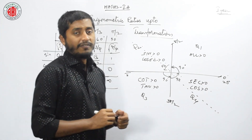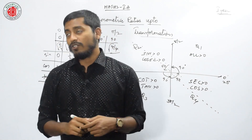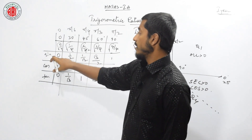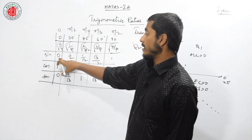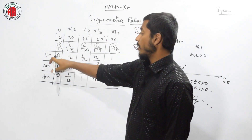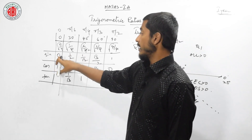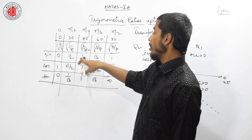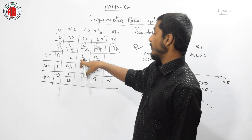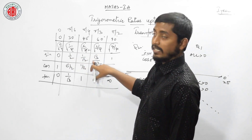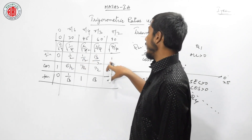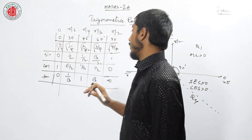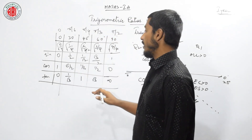Similarly, cosecant is the reciprocal of sin values: cosecant 0 is infinity, cosecant 30 = 2, cosecant 45 = root 2, cosecant 60 = 2 by root 3, and cosecant 90 = 1. This is how we remember the values for standard angles.